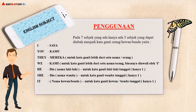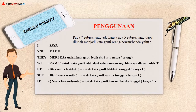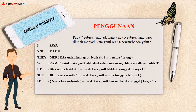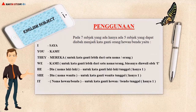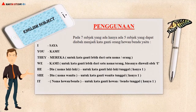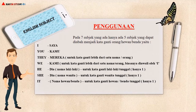Pada 7 subjek yang ada, hanya ada 5 subjek yang dapat diubah menjadi kata ganti orang, hewan, atau benda, yaitu They digunakan untuk kata ganti lebih dari satu nama atau orang.